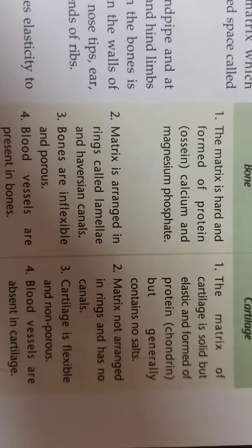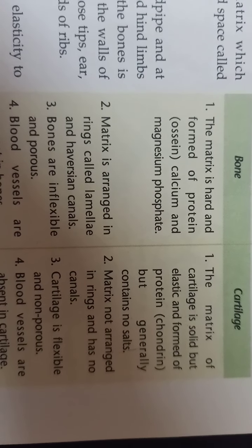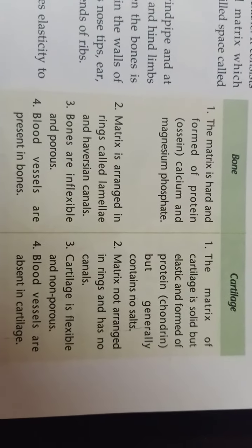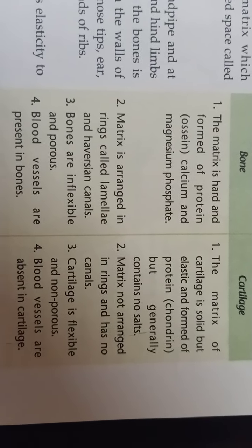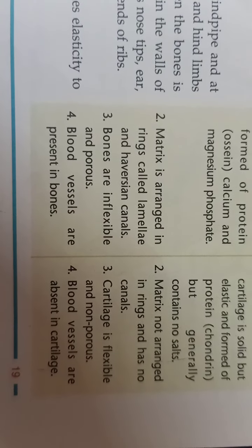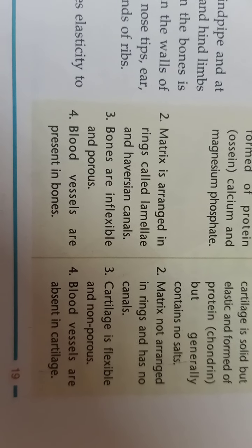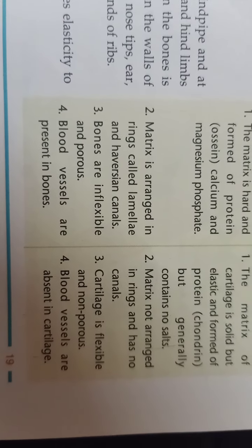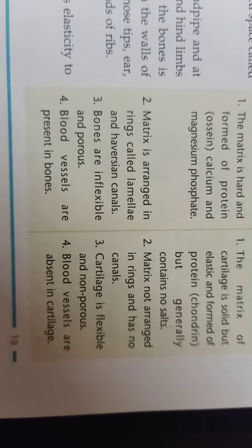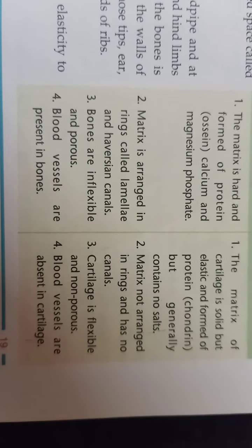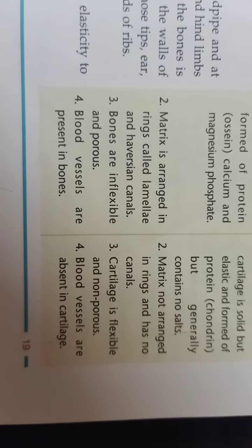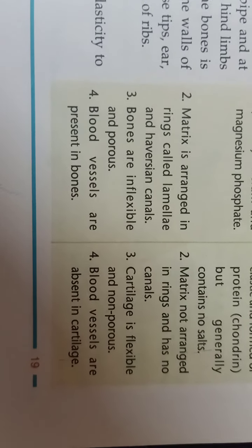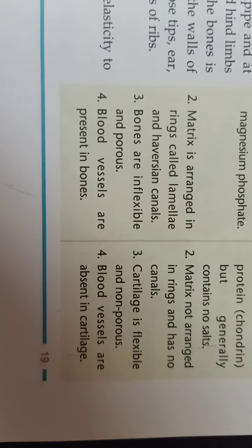For bone: the matrix is arranged in rings called lamellae and Haversian canals. For cartilage: the matrix is not arranged in rings and has no canals. Third, bones are inflexible and porous, while cartilage is flexible and non-porous. Fourth, blood vessels are present in bones, whereas blood vessels are absent in cartilage.